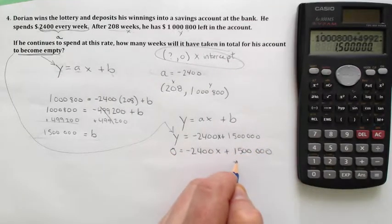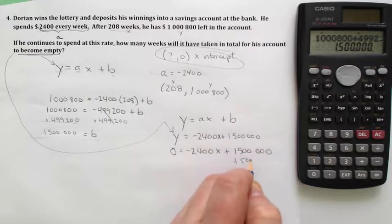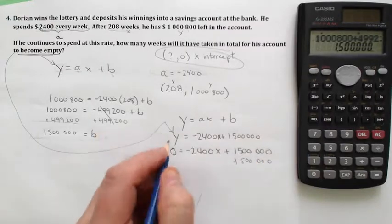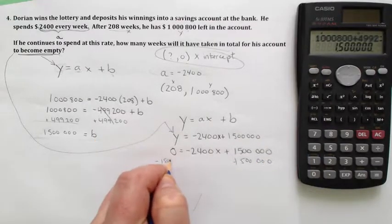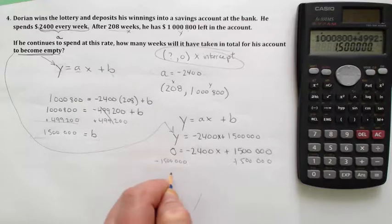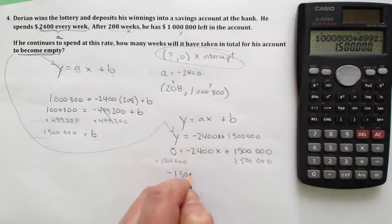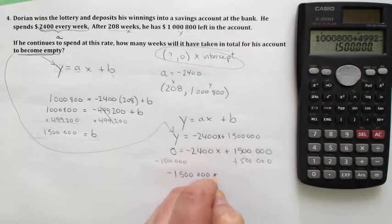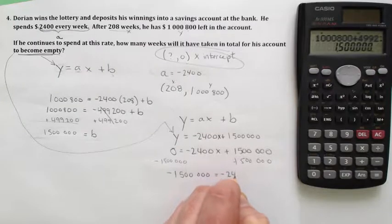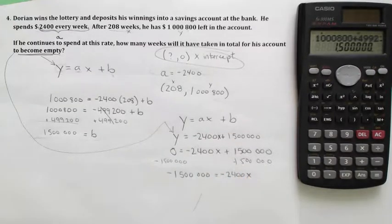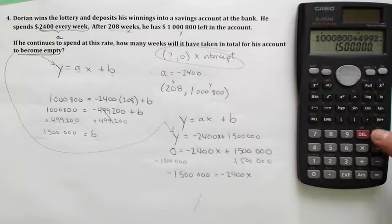So I'm going to subtract $1,500,000 from both sides, and I'm going to get negative $1,500,000 equals negative 2,400x. And then I'm going to divide both sides by negative 2,400.